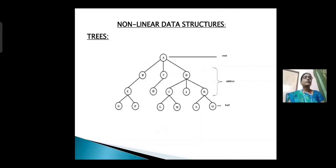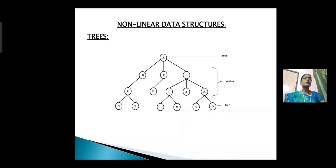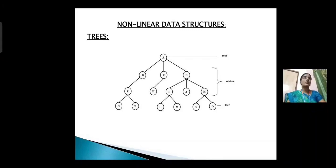Next, non-linear data structures. Non-linear data structures can be constructed as a collection of randomly distributed set of data items joined together by using a special reference. List of operations applied on non-linear data structures are: add an element, delete an element, display the element, sort the list of elements, search for the data elements. Types of non-linear data structures are trees and graphs.